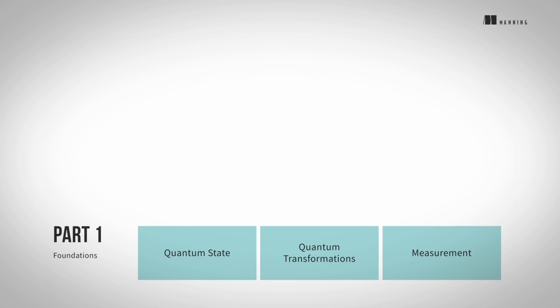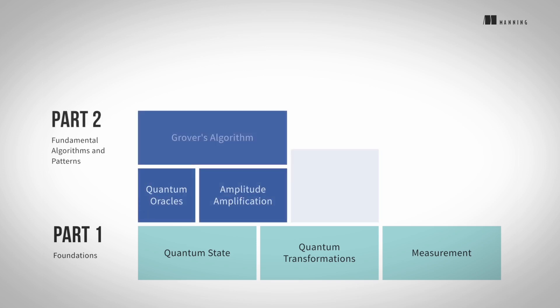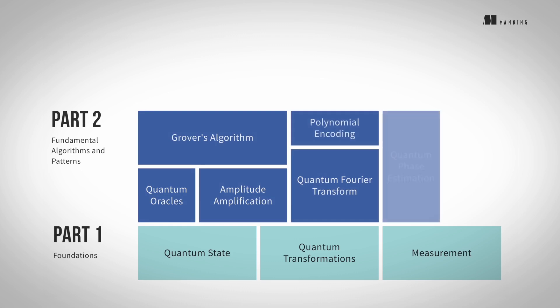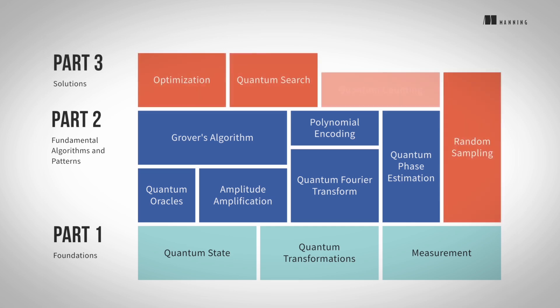Next, we cover key algorithms and patterns, including amplitude amplification, quantum search, Fourier transforms, phase and amplitude estimation, and polynomial encoding. Throughout all the chapters, we cover example applications including random sampling and optimization problems. We do not just repeat the common examples you find in other materials — we have several original applications in each chapter.